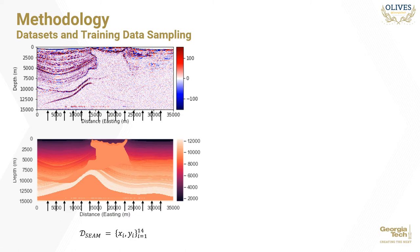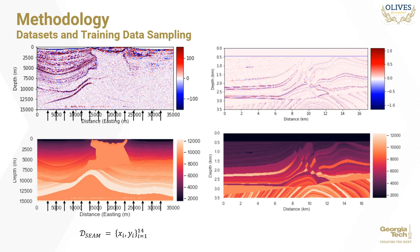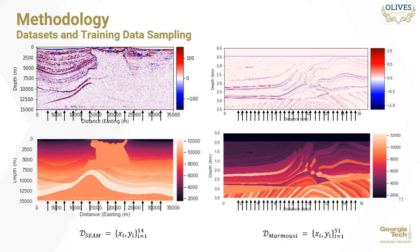The second dataset we use is the industry-standard Marmousi dataset. The model is accompanied by synthetic seismic data obtained by convolutional forward modeling of the acoustic impedance model with a seismic wavelet. Considering that this is an easier dataset, we make it our source dataset in the study and sample 51 wells from this survey.